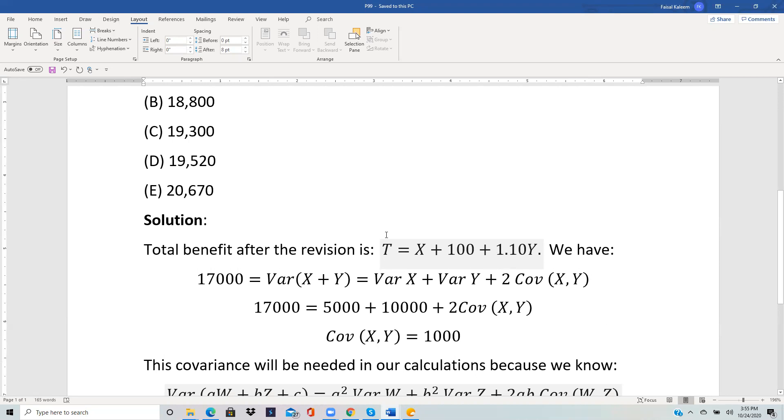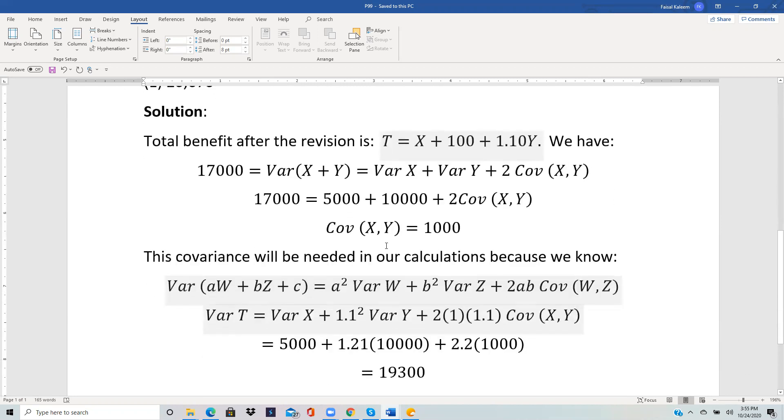And we need the variance of T. We call T the total new benefit. And we will be using this formula: variance of aW plus bZ plus c equals a squared variance W plus b squared variance Z plus 2ab covariance WZ.